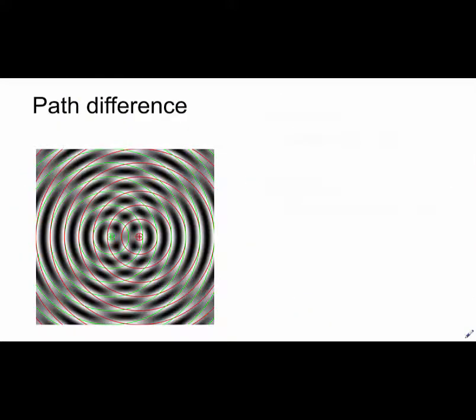One other important definition when dealing with interference is path difference. This shouldn't be confused with phase difference. Path difference is the difference in the length of journey travelled by two waves.